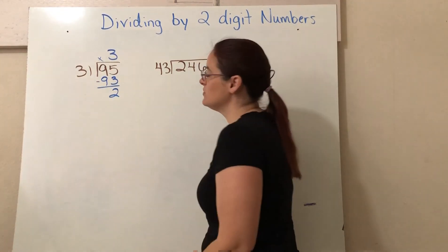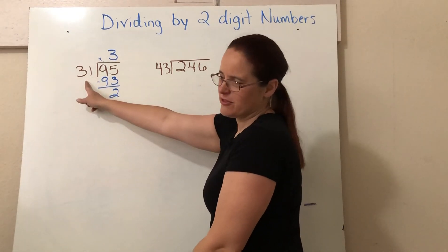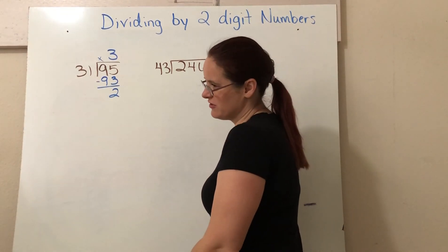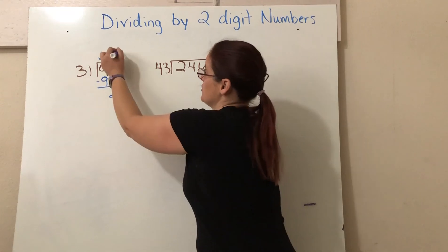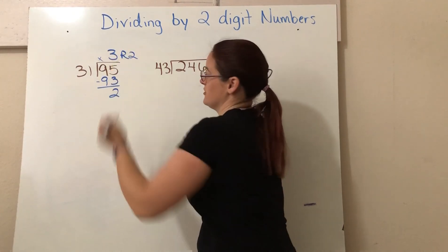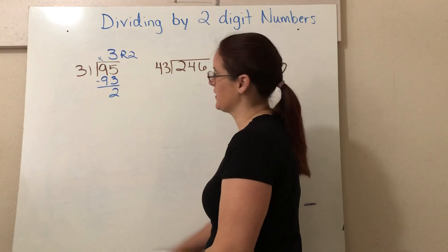Five minus three is two. Can I make a group of 31 if I only have two left over? No. So two becomes my remainder. And there's the answer. Three remainder two.